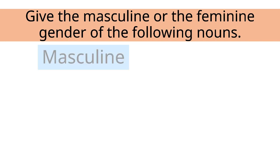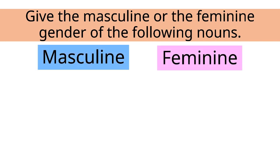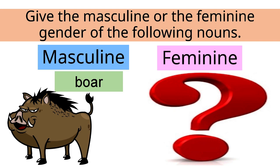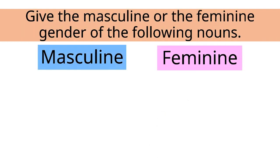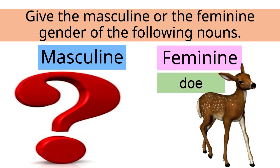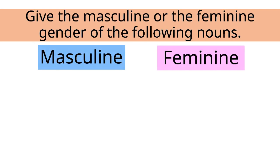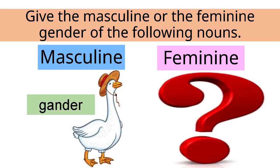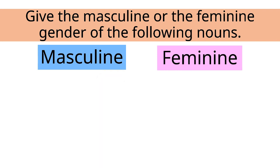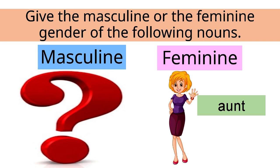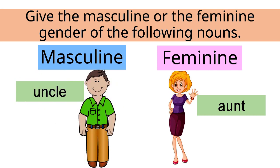Great! Now, give the masculine or feminine gender of the following nouns. What is the feminine of boar? The correct answer is gilt. What is the masculine of doe? The correct answer is stag. Perfect! What is the feminine of gander? The correct answer is goose. Great job! What is the masculine of aunt? The correct answer is uncle. Perfect!